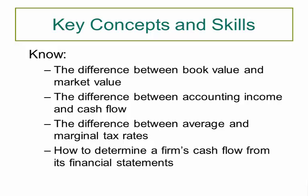The third concept is the difference between average and marginal tax rates. Average tax rate is the total amount of taxes paid divided by total income. Marginal tax rate is the amount of tax payable on the next dollar earned — which tax bracket you're currently in. The fourth concept is how to determine a firm's cash flow from its financial statements. Cash flow is an extremely important topic in finance and will be covered throughout this lecture.